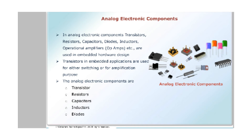The analog electronic components required to design an embedded product include capacitors, transistors, diodes, inductors, operational amplifiers, LEDs, trimers, relays, and switches. These are all the analog electronic components. They are integrated onto the IC board or built on the PCB board to manufacture one embedded product.